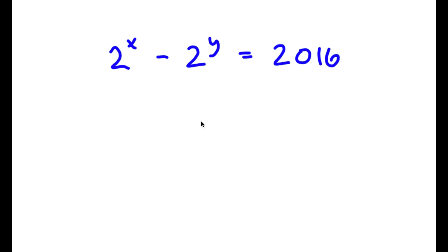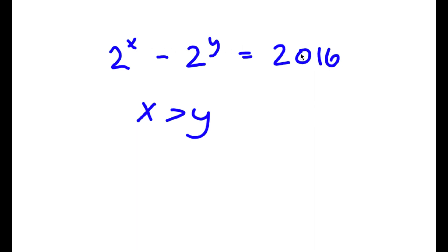In this problem, I have 2 to the power of x minus 2 to the power of y is equal to 2016. At first glance, I can already tell that x is greater than y because if x were less than y, this would result in a negative number. But because it results in a positive number, we know x is greater than y. So this means we can say that x is equal to y plus some constant k.